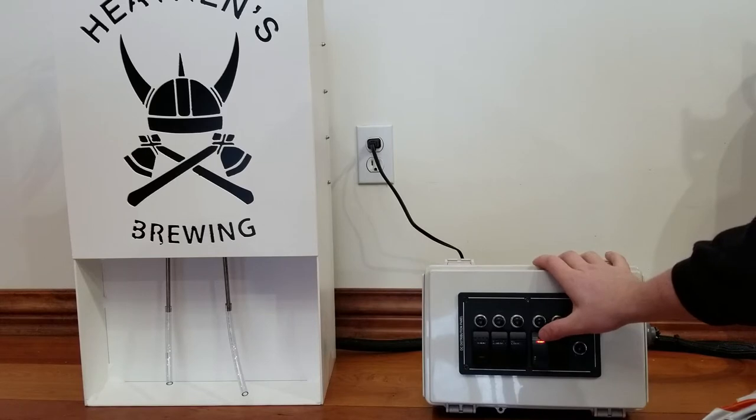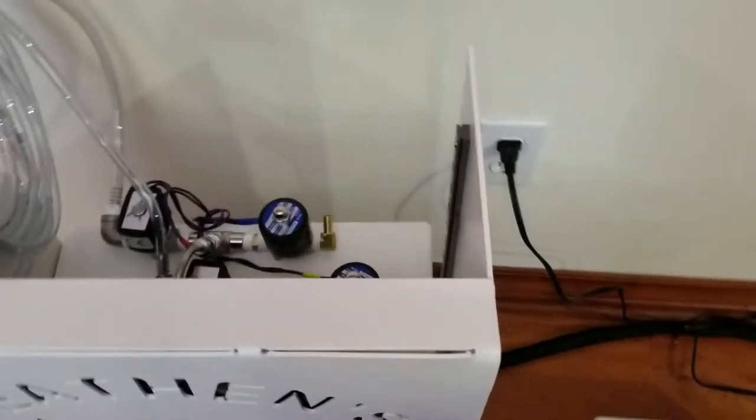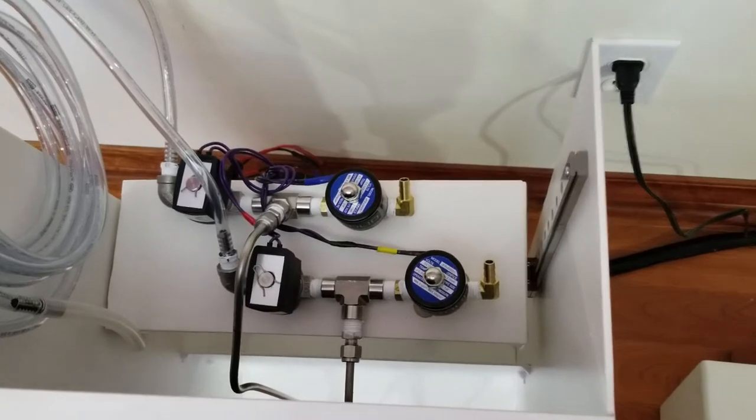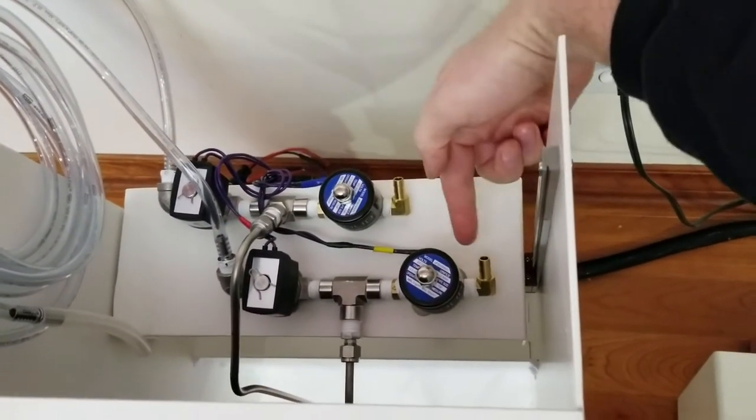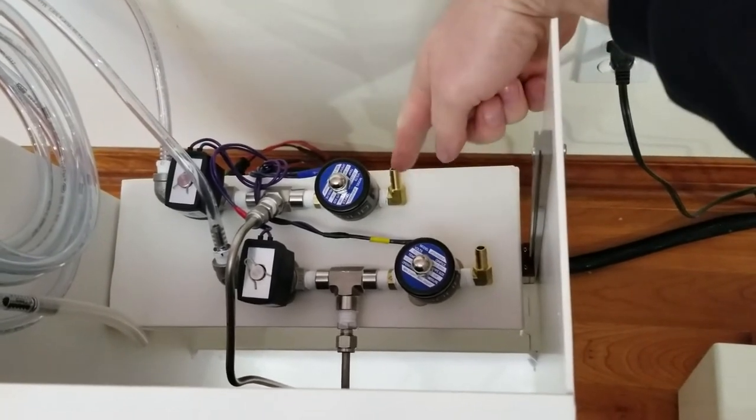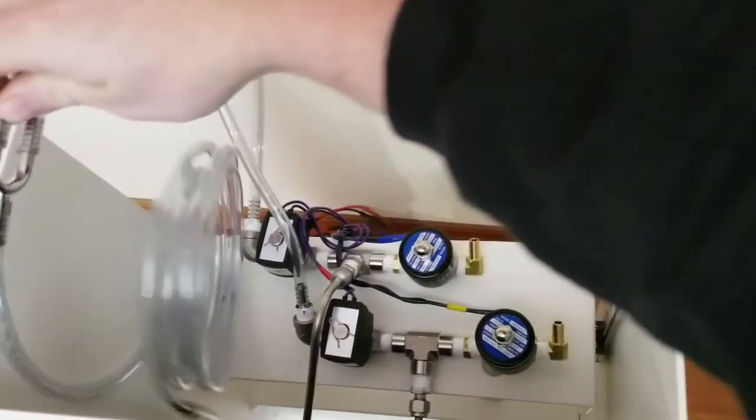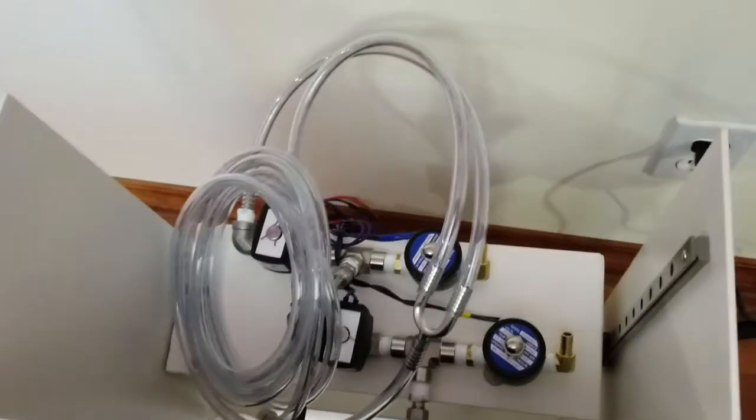Grab you, bring it up here. There's our valves. We got stainless in on the CO2 side, brass on the beer side. Brass in on the CO2 side, quarter inch holes, Y style splitter.